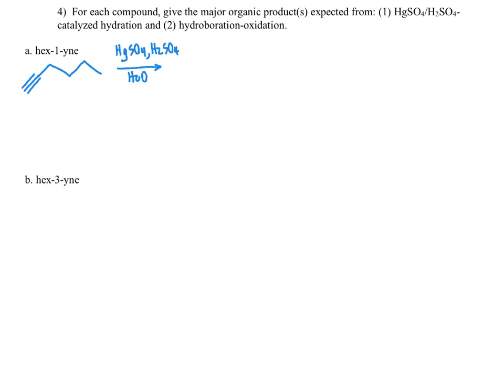In this reaction, anytime you have an alkyne reacting under these conditions with mercury ion and sulfuric acid and water, what's going to happen is we're going to follow Markovnikov's rule to add H and OH across the carbon-carbon triple bond. Markovnikov's rule indicates that the proton needs to add to the less alkyl substituted carbon, so our new proton needs to go here and the hydroxy group needs to add here. No need to worry about carbocation rearrangements; they're not going to happen.